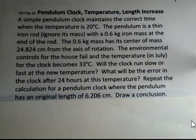It keeps regular time when the temperature is 20 degrees Celsius. The pendulum is constructed with a solid thin iron rod. We're going to ignore its mass and take this as a simple pendulum problem with all the significant mass at the end of the pendulum. There's a 0.6 kilogram iron mass at the end of the rod and the center of mass of the iron is 24.824 centimeters from the axis of rotation.